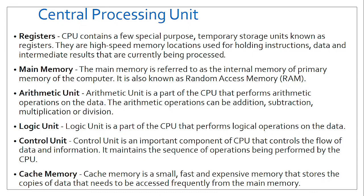The arithmetic unit performs operations such as addition, subtraction, multiplication, and division — a very crucial component of the CPU. The logic unit allows the CPU to compare, such as greater than, less than, or equal to. The control unit maintains a sequence of operations within the CPU itself. Cache memory gives room for the CPU to fetch frequently accessed instructions instead of going all the way to the main memory.